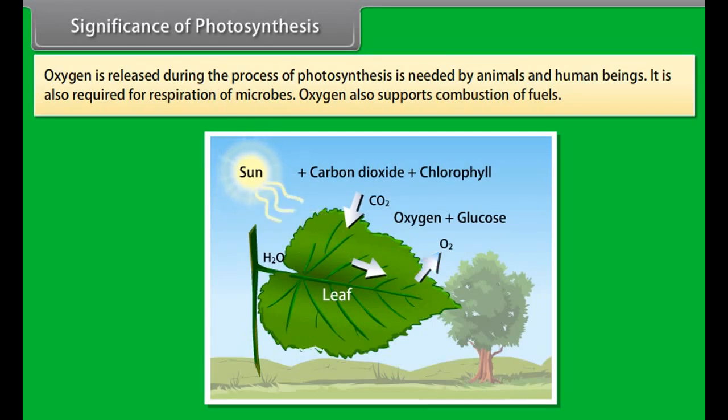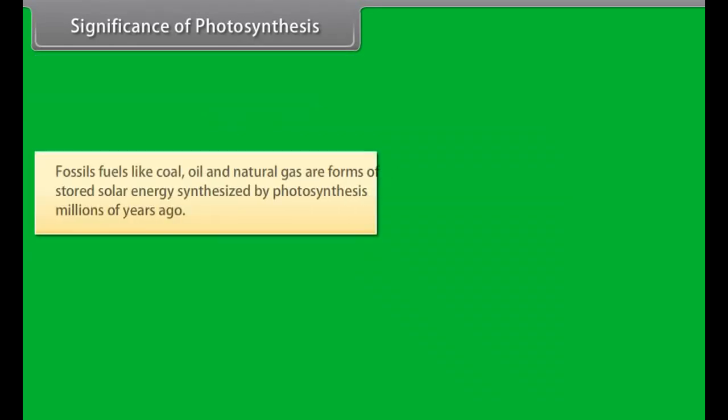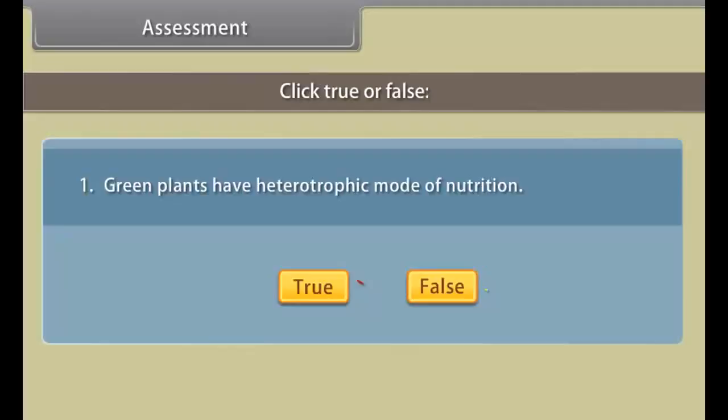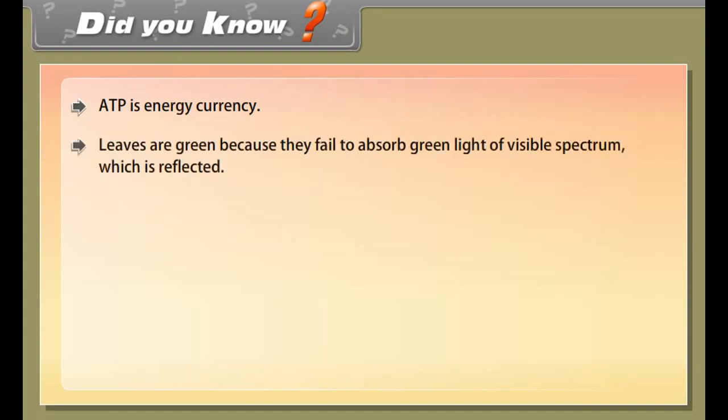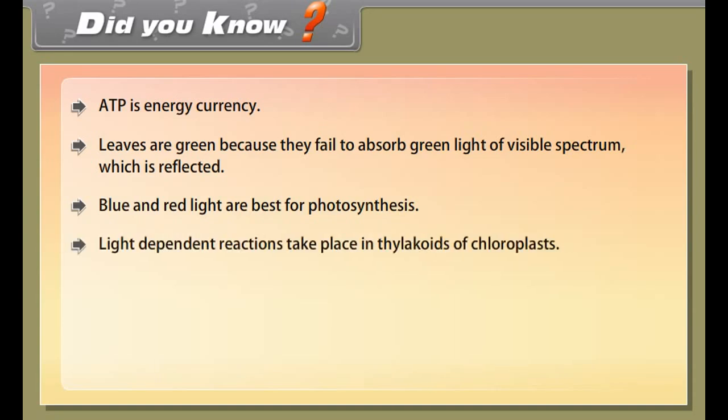Significance of photosynthesis. Photosynthesis is important for a number of reasons. By photosynthesis, green plants synthesize food from simple raw materials like CO2 and H2O. Thus, it sustains life on earth. Oxygen is released during the process of photosynthesis which is needed by animals and human beings. It is also required for respiration of microbes. Oxygen also supports combustion of fuels.